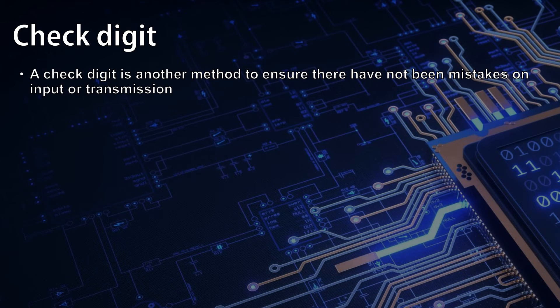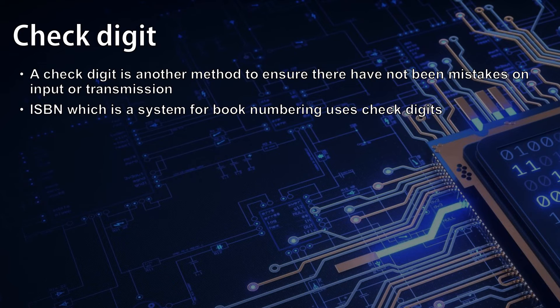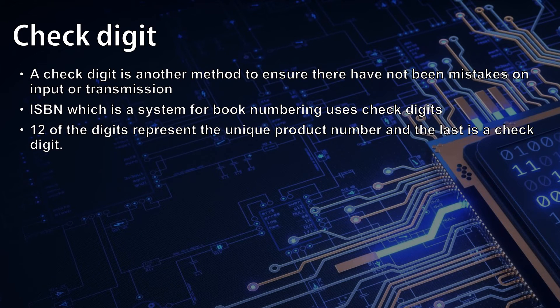A check digit is another method to ensure that there have been no mistakes on input or transmission. ISBN, which is a system for book numbering, uses check digits. Here, 12 of the digits represent the unique product number, and the last is a check digit.